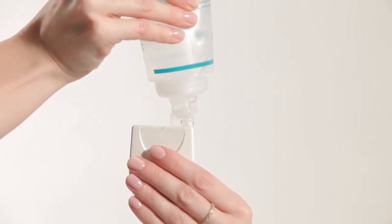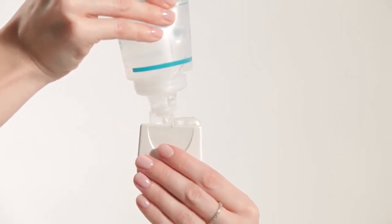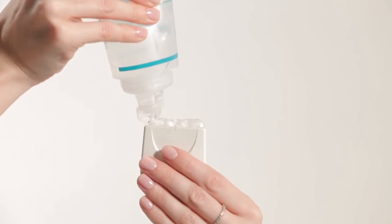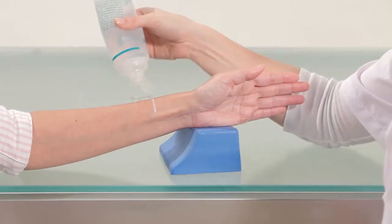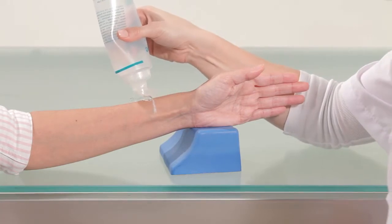Apply a uniform layer of ultrasound gel on the outer surface of the probe and on the subject's arm, next to the line.